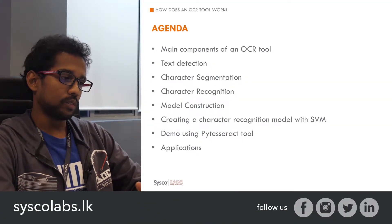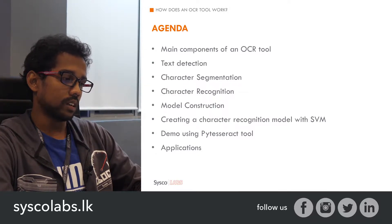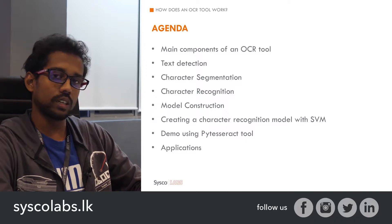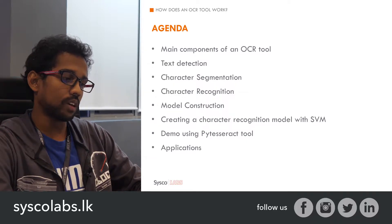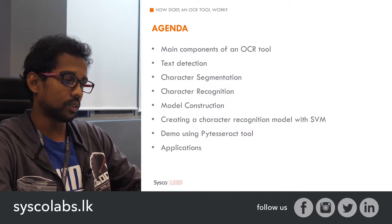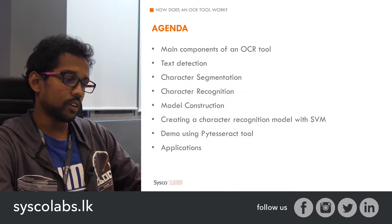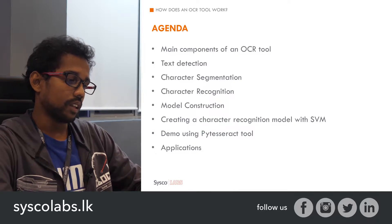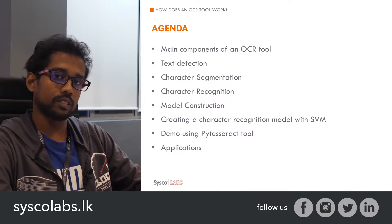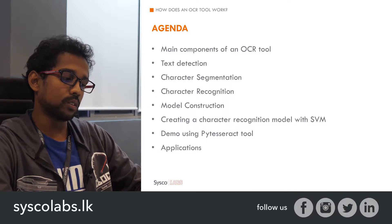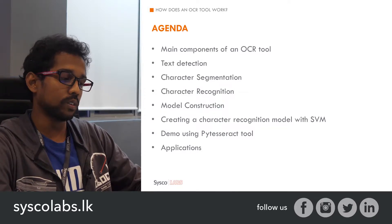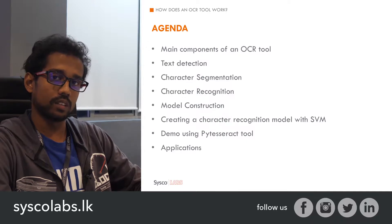This is the agenda for today. We are going to first discuss the main components of an OCR tool, which include text detection, character segmentation, and character recognition — all based on machine learning. Next, we'll discuss how to construct a machine learning model for these tasks. I'll do a small demonstration on how to create a character recognition model with a support vector machine, then use an open source library called PyTesseract to demonstrate a full OCR process. Finally, we'll discuss applications of OCR.